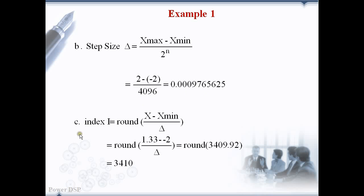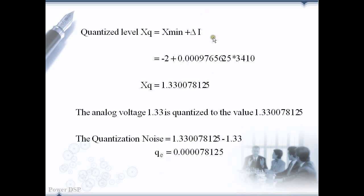Next we find the quantization level for the analog voltage 1.33 volts. For this we first find the index value using the equation: i equals round of (x minus x minimum) divided by delta x. Here x is 1.33 volts and x minimum is minus 2 volts, and delta is the step size already calculated. After substituting all the values we get the index value as 3410 after rounding. Then we substitute delta, i, and the minimum voltage in the equation x_q equals x minimum plus delta times i to get the quantized voltage. The quantization error is calculated by subtracting the original sample value from the quantized value.